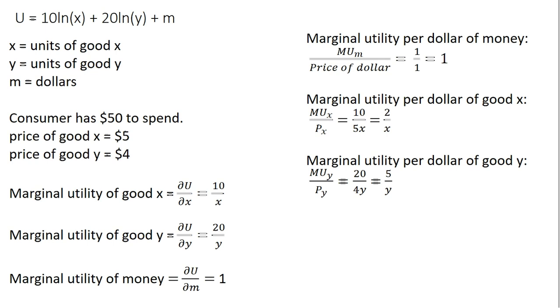So x, as usual, is units of good x, y is units of good y, and m represents dollars. Let's assume the consumer has $50 to spend. The price of good x is $5 per unit. The price of good y is $4 per unit.